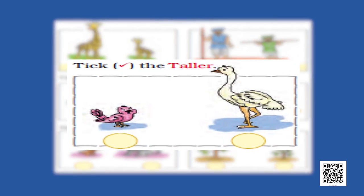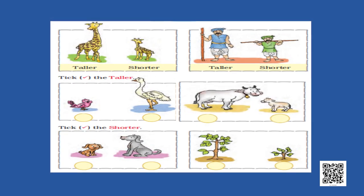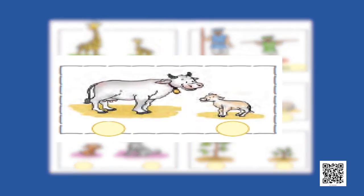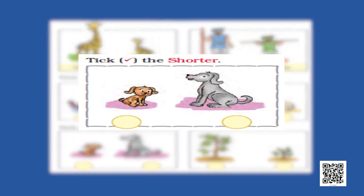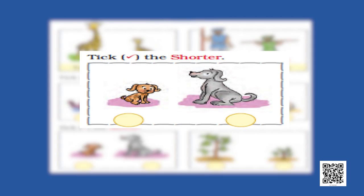There are many such objects you can see. These two birds — which is taller and which is shorter? Try to find and tell why you say this is taller and this is shorter. These two animals are there — see these two animals and tell which is taller and which is shorter.